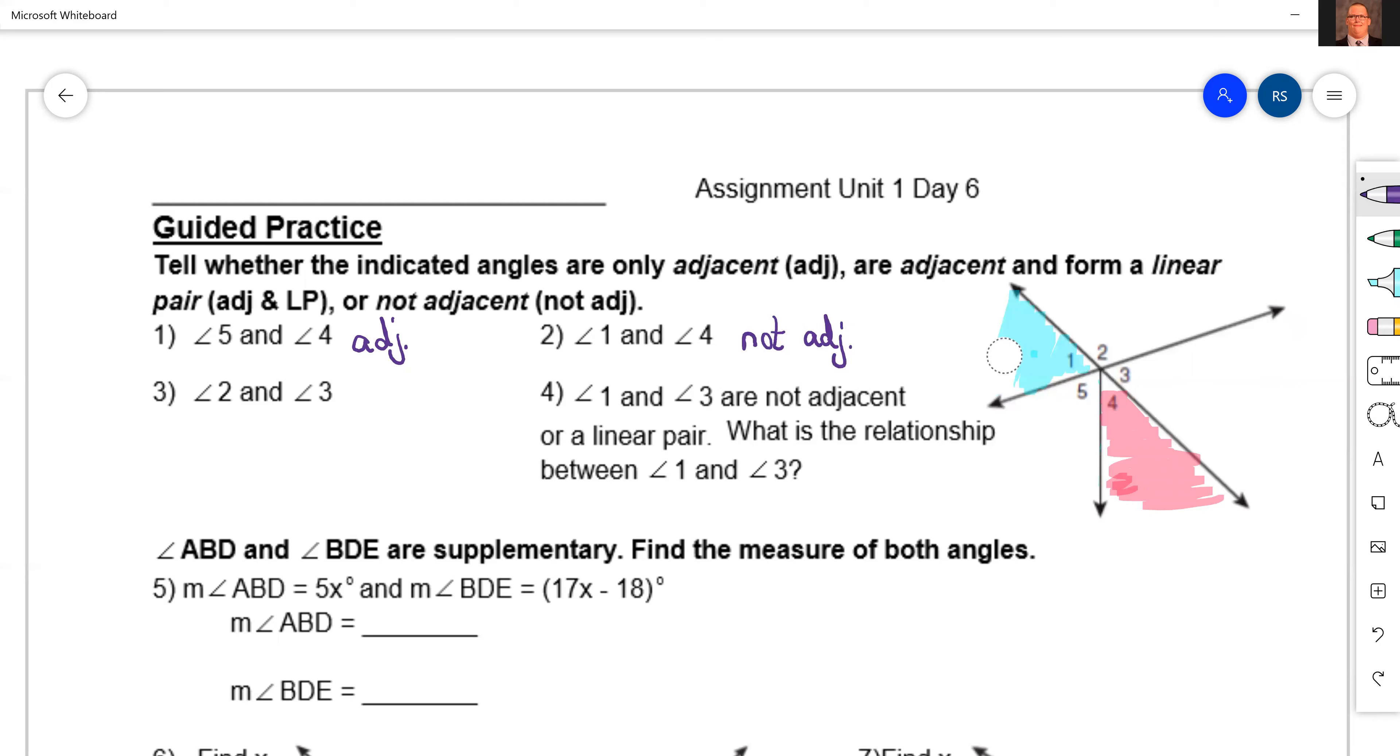And last but not least, well I say last but not least, it's not really last or least, but two and three. There's two, there's three. Okay, what do we think? Yeah, they share a side so they're adjacent.